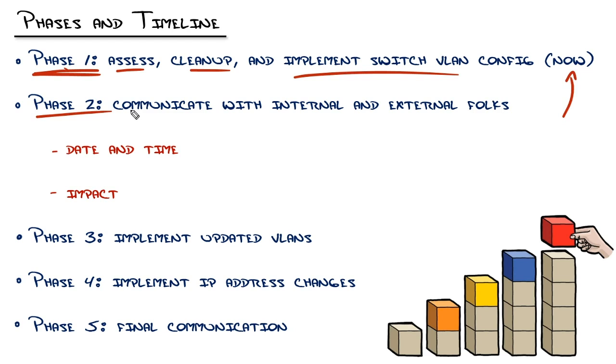Then I need to communicate with internal external folks of the date, time, and impact that I'm going to have as I do the following phases. Because after I do that cleanup, I'm going to have to implement the new VLANs and IP addresses. That's going to take everything down. How long is it going to be down? When's it coming back up? What do I do if things aren't working? That's what folks, people, human beings need to know.